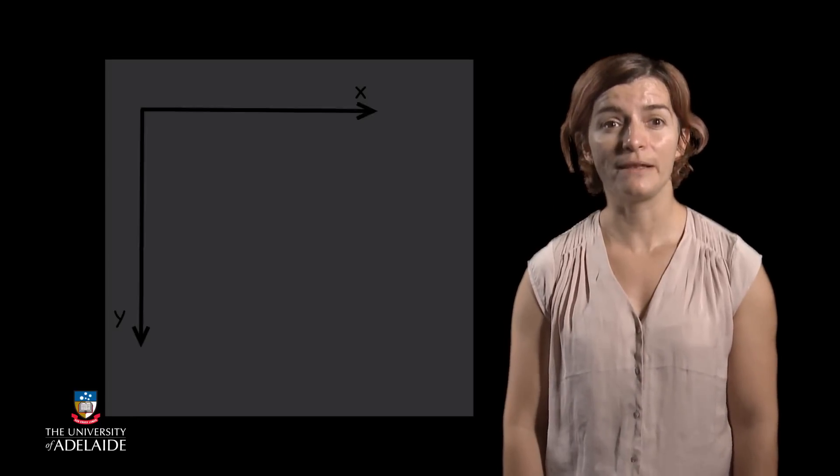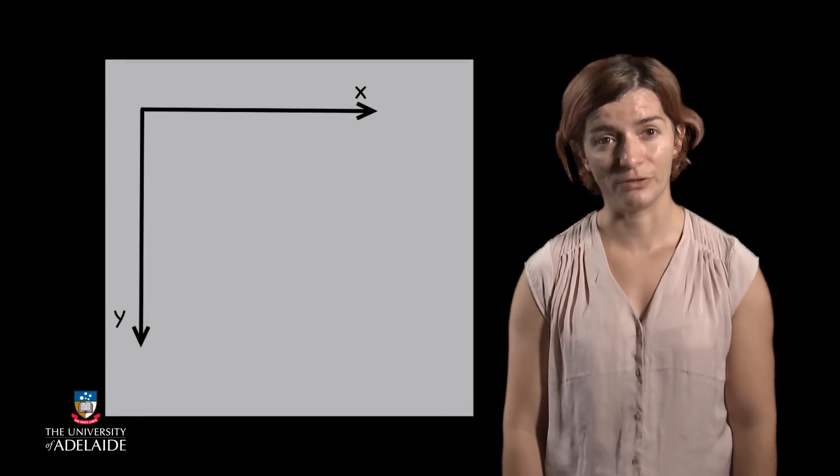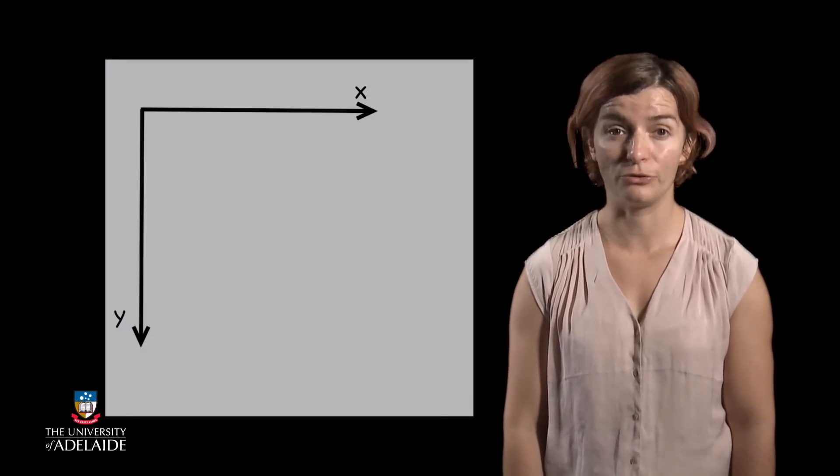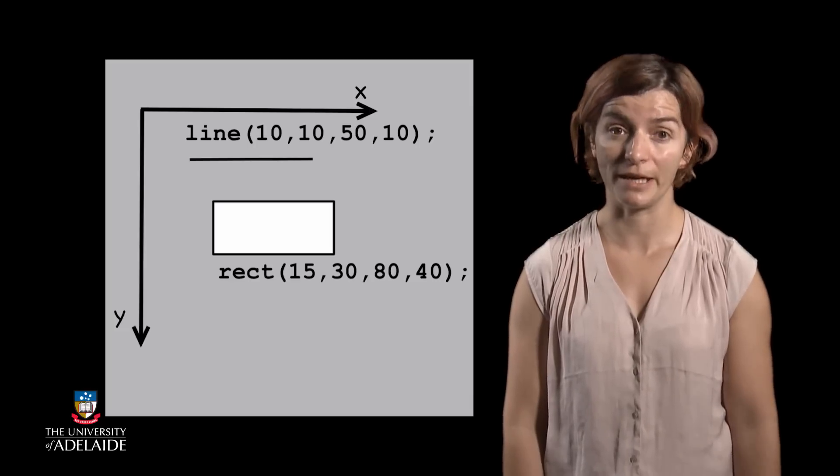In the previous section, we looked at the coordinate system that Processing uses. We also learned how to draw basic shapes such as lines, rectangles, and circles.